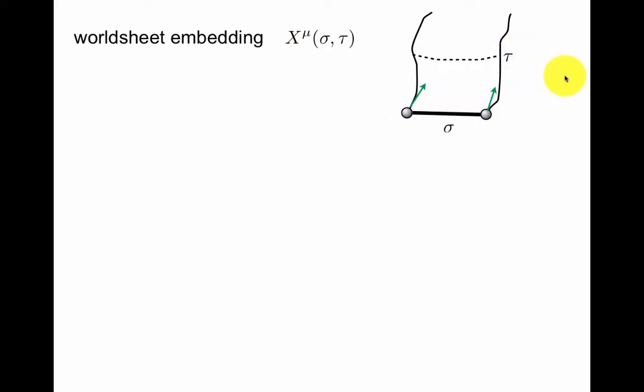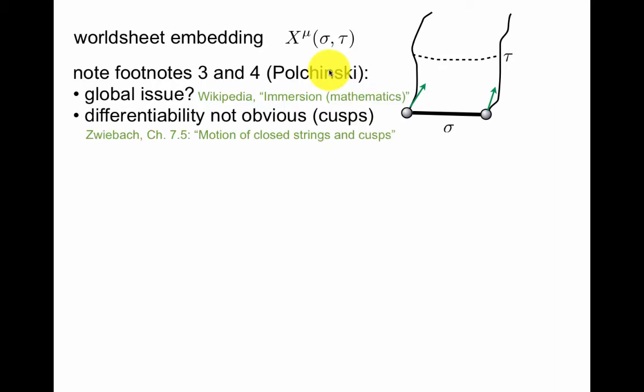You might have wondered already in the point particle case, this is discussed in footnote 3 and 4 in Polchinski chapter 1. The first is about the global issue, and immersion means that it doesn't double back on itself, and an immersion is differentiable, so this turns out to be not much of a problem.